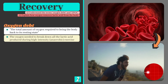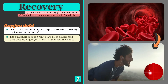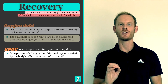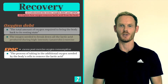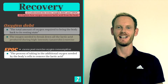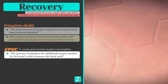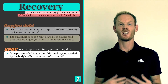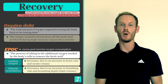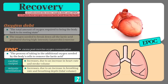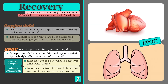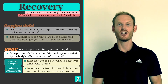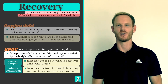This is why heart rate and breathing rate remain elevated for some time when recovering from a sprint. This leads us to our second term, EPOC, or excess post-exercise oxygen consumption. EPOC can be defined as the process of taking in the additional oxygen needed by the body's cells to remove the lactic acid created by anaerobic respiration. To achieve EPOC both cardiac output and minute ventilation go up, serving to draw more oxygen from the atmosphere into the bloodstream and speeding up the rate of blood transportation.